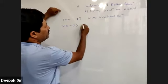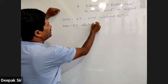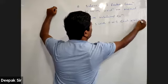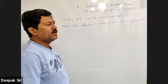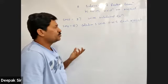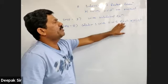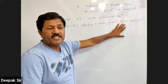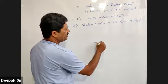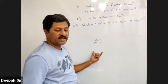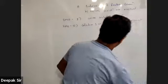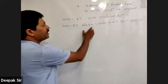Step number two — calculate and write the oxidation number of each element involved in the chemical reaction. We have to write the oxidation numbers above each element in the equation. For example, this element is plus three and this is minus one. So step two is to calculate and write the oxidation number of each element.